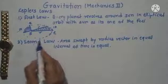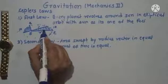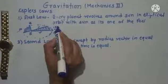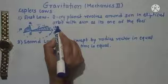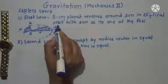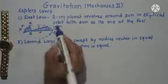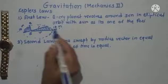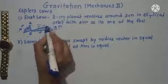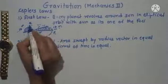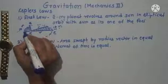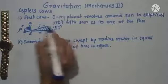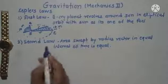The second law states that the area swept by the radius vector in equal intervals of time is equal. Whether the time interval is 10 minutes, 10 seconds, or 10 hours, the area swept in that same interval is always equal. This area swept by the radius vector in 10 minutes equals the area swept by the radius vector in another 10 minutes anywhere along the orbit.